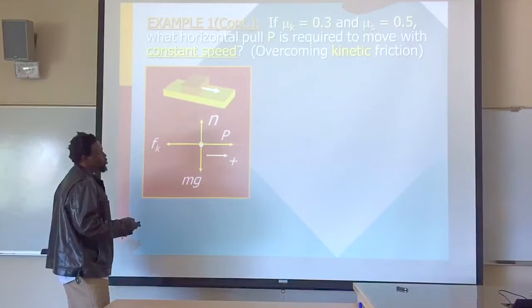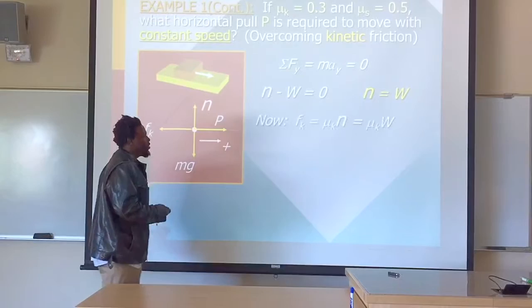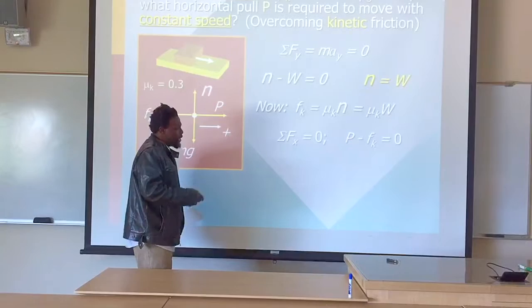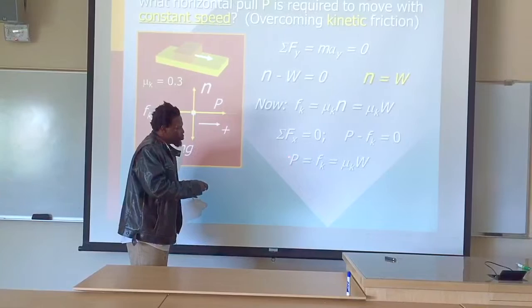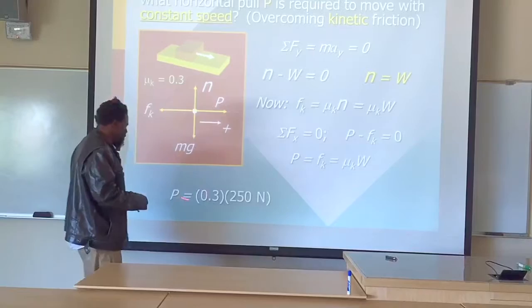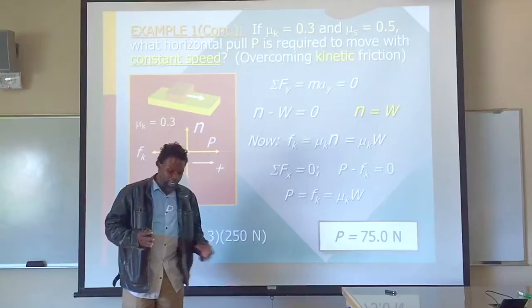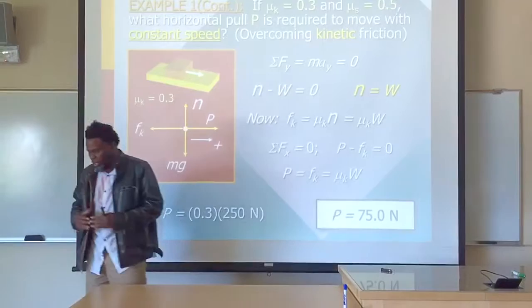In finding the friction force due to kinetic friction, we redo the same process. We find the normal force, and from that we get the kinetic friction force because we know Mu-K. From the sum of forces in the x direction, we know P equals Fk. Therefore, there is a direct relationship between P and the normal force, and we find P equals 75 Newtons. Observe that the pulling force while the object is in motion is less than the pulling force needed to get it going. Therefore, the force associated with static friction is greater than the force associated with kinetic friction.